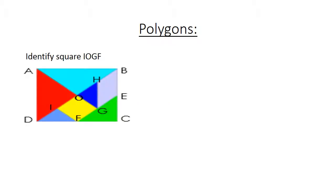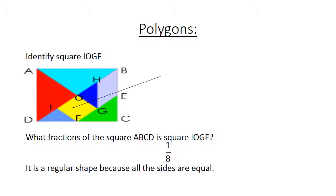Polygons. Identify square IOGF. There it is. What fraction of the square ABCD is square IOGF? 1 over 8. It is a regular shape because all the sides are equal.